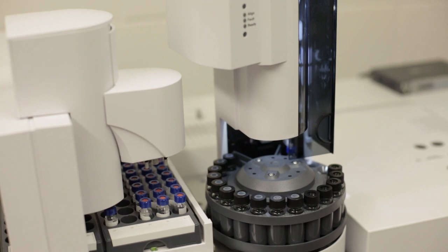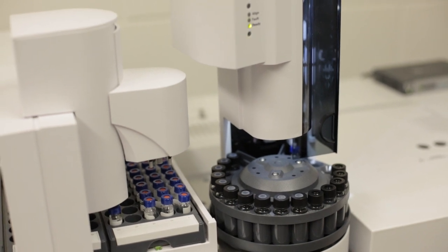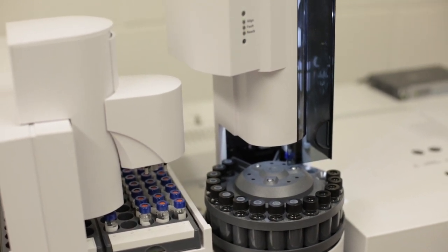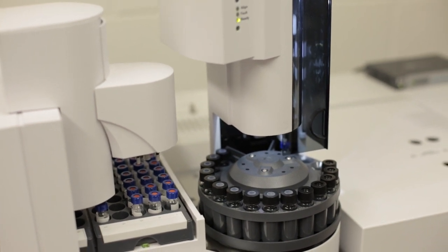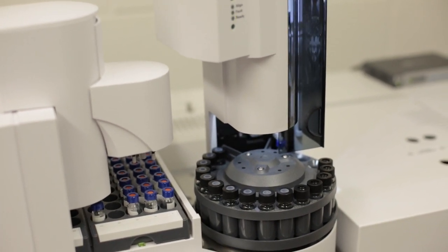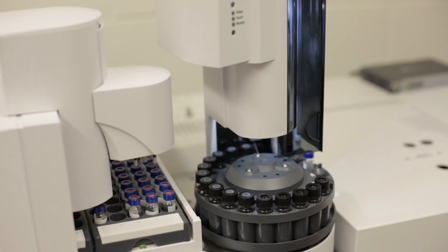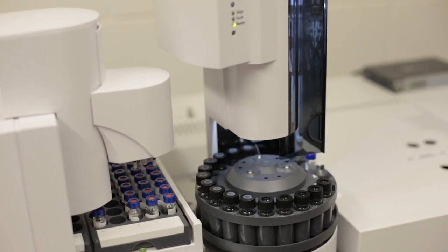Now it's going to pick up some sample from the vial we've just prepared. Rinse the syringe with that a few times. And then inject it onto the machine. So it's now on the chromatography column and the chromatographic run takes about 19 minutes.